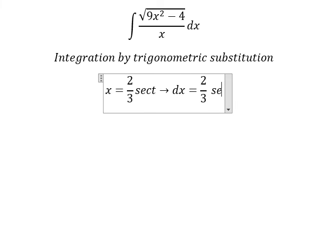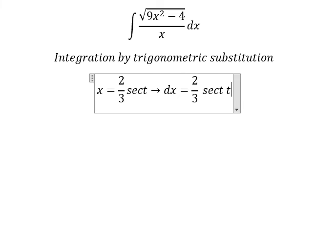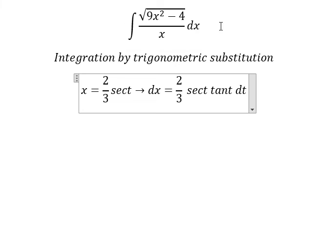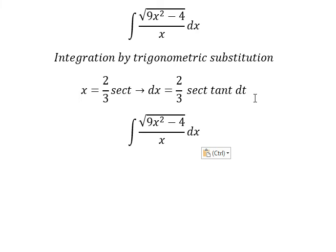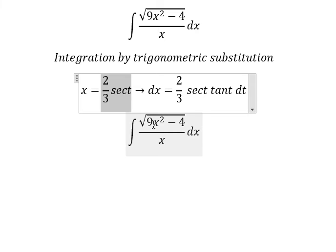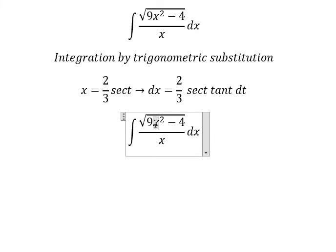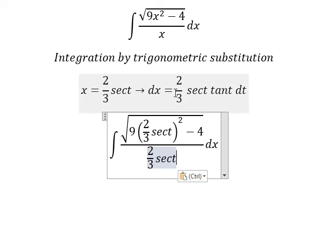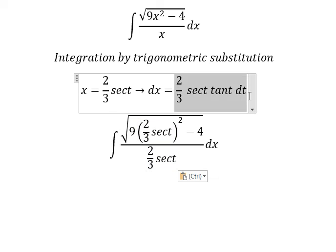Next, we take the first derivative of both sides, and we get dx equals 2 over 3 secant t tangent t dt. We substitute this in for dx, and we substitute the simplified expression in for the other part.